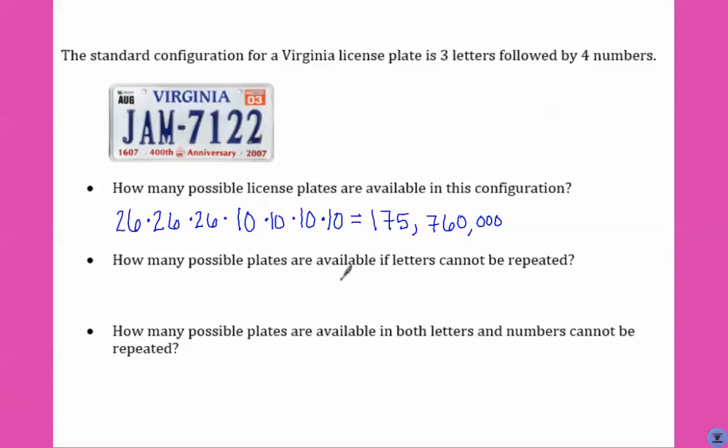Now what if the letters can't be repeated? We still have 26 options for our first letter. But once we use that letter, that means there's only 25 options for the second, and only 24 options for the third. It doesn't say anything about numbers not repeating, so that's still 10, times 10, times 10, times 10. If you wanted to write it as 10 to the fourth, you could do that too. That ends up giving us 156,000,000 possible license plates.